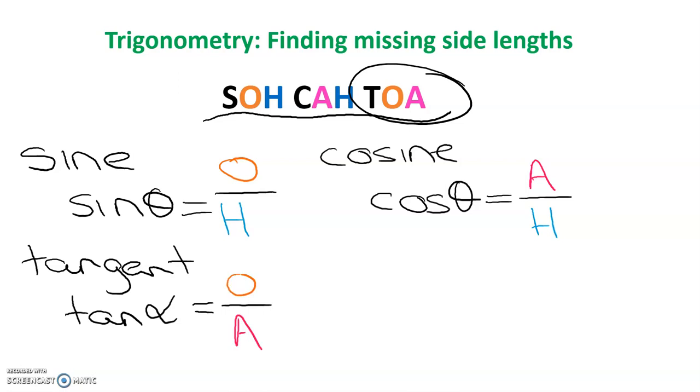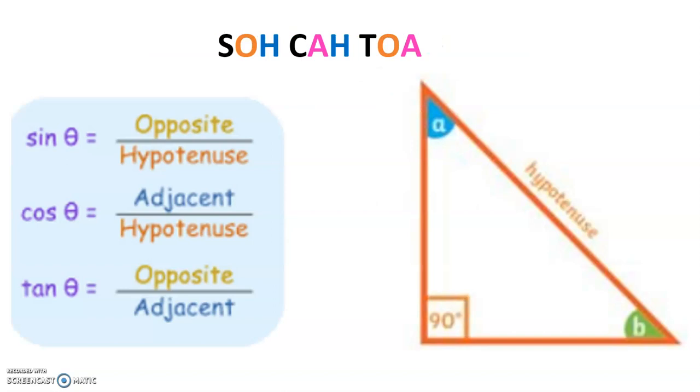But how do you use these three identities? Let's have a look. Firstly you need a right angle triangle which we have because we have 90 degrees in the corner. The hypotenuse or H is always opposite the 90 degrees or it's the longest side length whichever way you want to remember that.